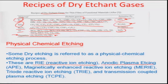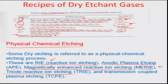Other forms of physico-chemical dry etching include anodic plasma etching, magnetically enhanced reactive ion etching (MERIE), triode reactive ion etching, and transmission coupled plasma etching. I will show how these magnetically enhanced plasmas and DC or RF plasmas are created in later modules.